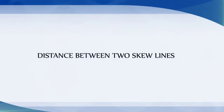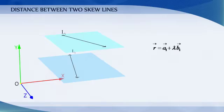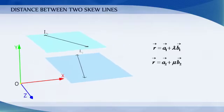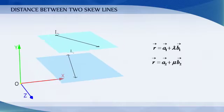Distance between two skew lines. Let L1 and L2 be two skew lines with equations: R vector equals A1 vector plus lambda B1 vector, and R vector equals A2 vector plus mu B2 vector.